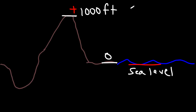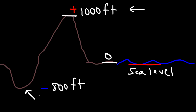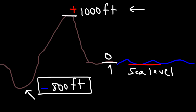At the top of the mountain, the elevation is positive because it's above sea level. But at this valley, the elevation is below sea level, so we give it a negative value — let's say negative 800 feet. It's 800 feet below sea level. So elevation helps you see the relationships of positive numbers with negative numbers. A negative number means it's below zero; a positive number means it's above zero.